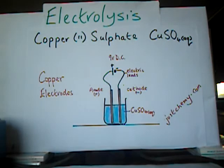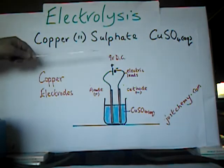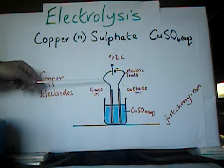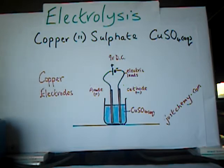Now, looking at the diagram here, I'm going to use 9 volts direct current. In this case, this is an example where we're using electrodes that do get involved in the electrolysis process. They are not inert in this situation.